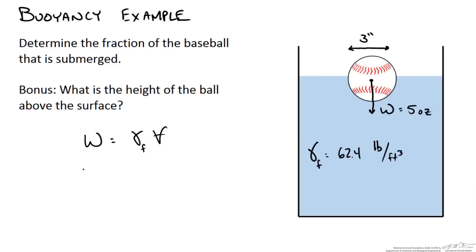So 5 ounces is equal to 62.4 pounds per foot cubed, and then we can solve for the displaced volume. We need to convert these to the appropriate units. There are 16 ounces to a pound, which now means that the volume of our fluid that we displace due to the submerged baseball is 5 times 10 to the minus 3 feet cubed.